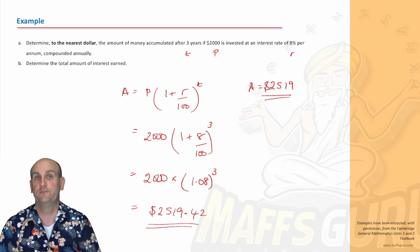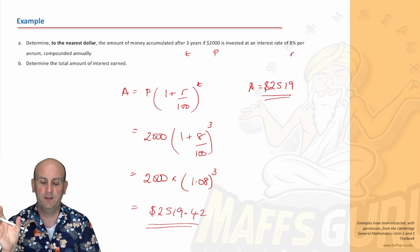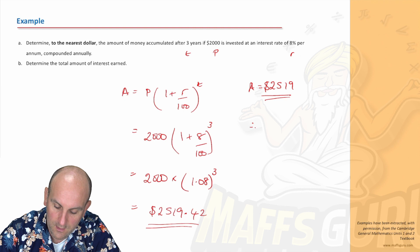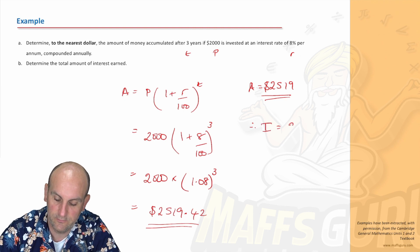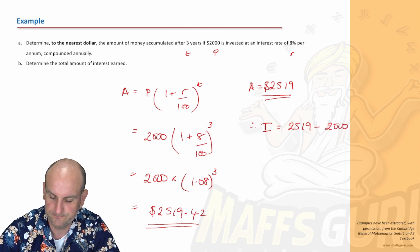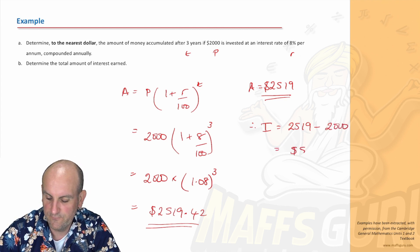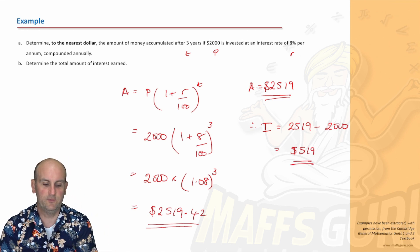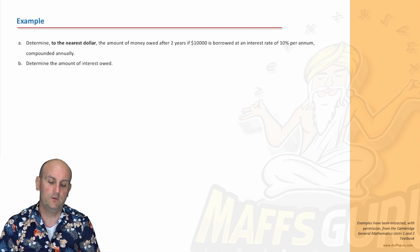Determine the total amount of interest. The interest is the difference between the final amount and my principal. So my interest is $2,519 minus my original amount of $2,000, which is $519. If we know this formula and we know that we're compounding, life is awesome.